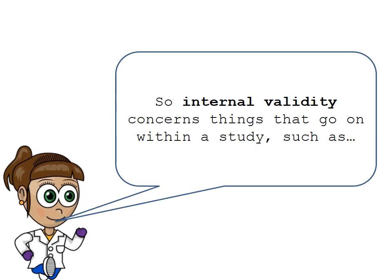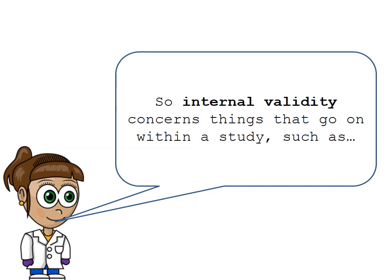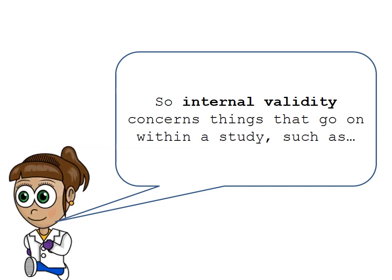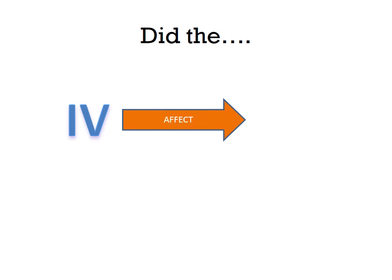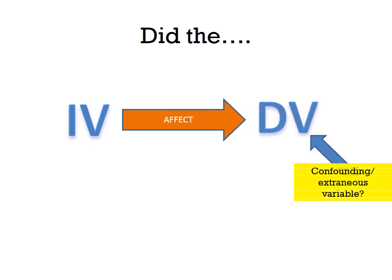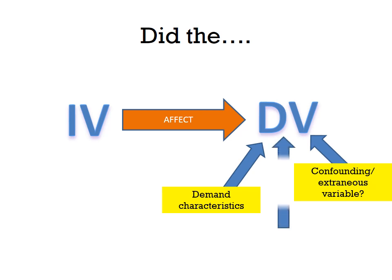Internal validity concerns things that go on inside or within a study, such as: did the IV affect the DV, or did something else have an effect on the dependent variable? Was there another reason we got our results? Could it have been a confounding or extraneous variable, demand characteristics, or investigator effects that affected our results?